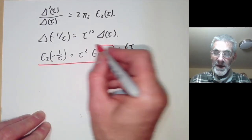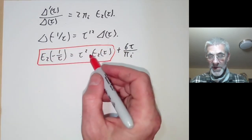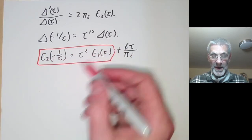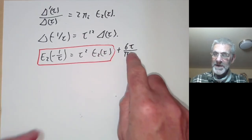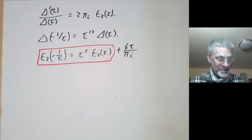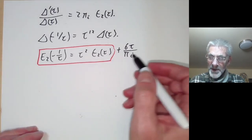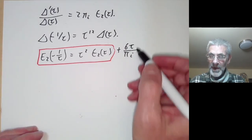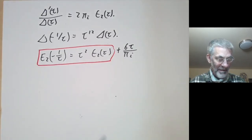But E2 isn't a modular form of weight 2, because there aren't any modular forms of weight 2, and this extra term is a correction factor. E2 just fails to be a modular form by this elementary correction factor.